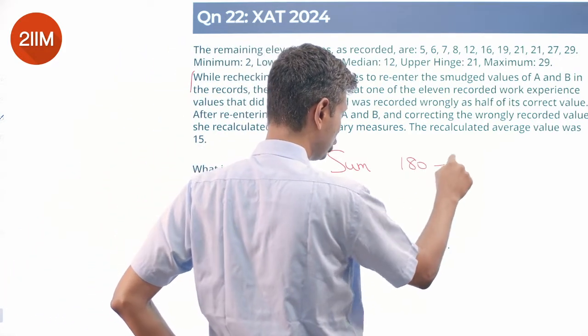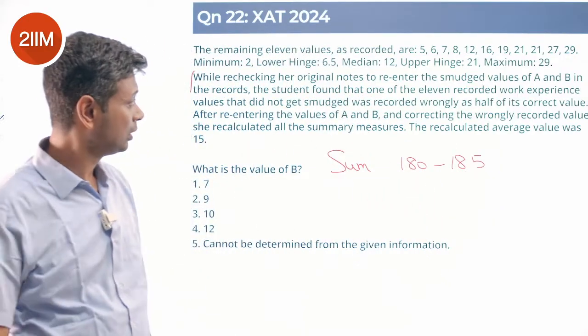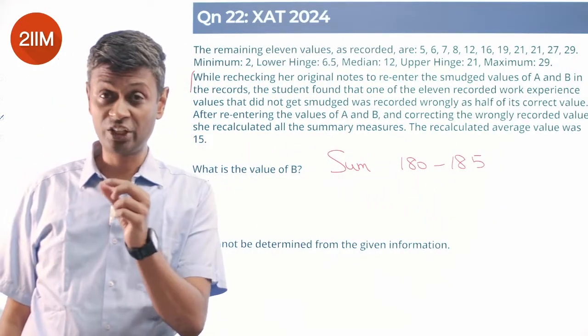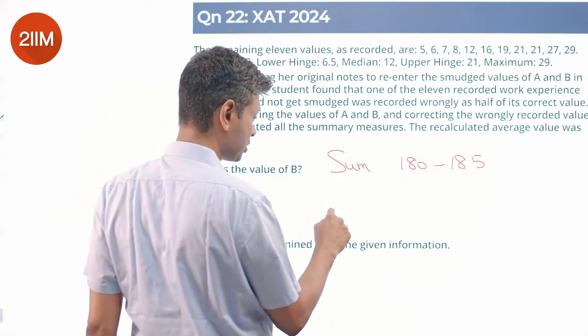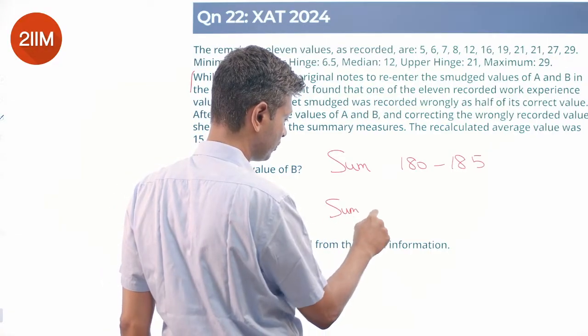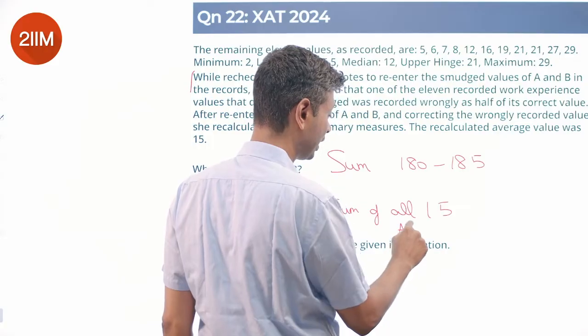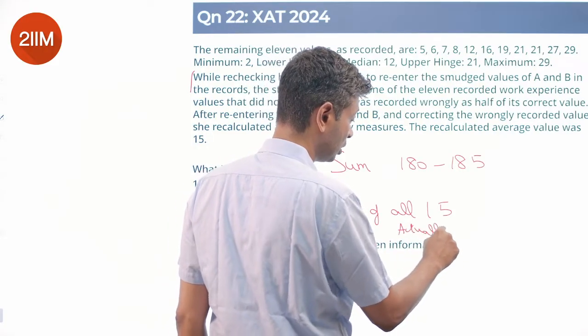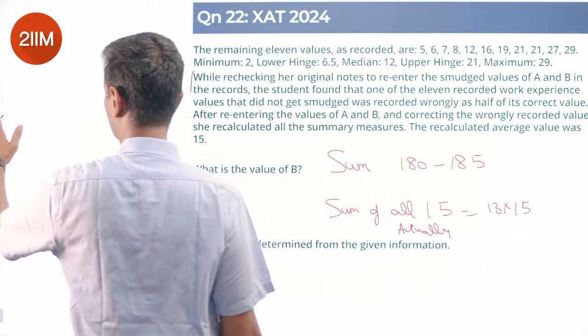The recalculated average value was 15. We already did the total sum of all of these should go from 180 to 185, one of these. But there is a mistake here - one number has been, half of the value has been written. So the actual sum, the correct sum, is 13 into 15, which is 195.